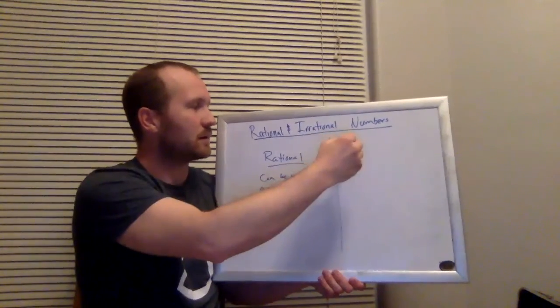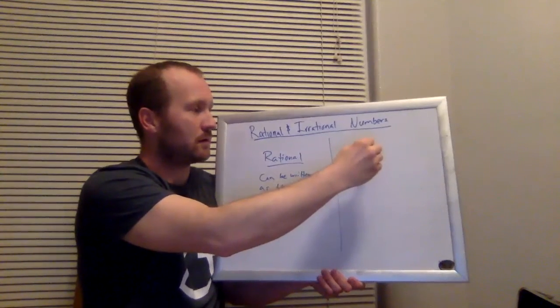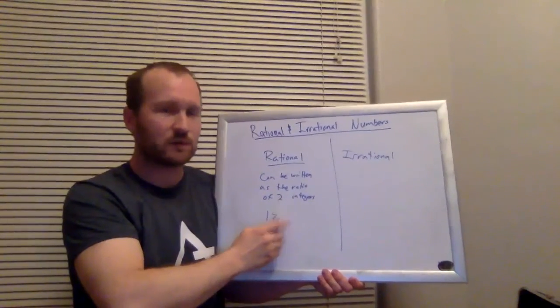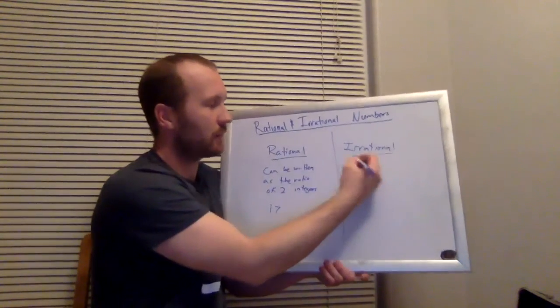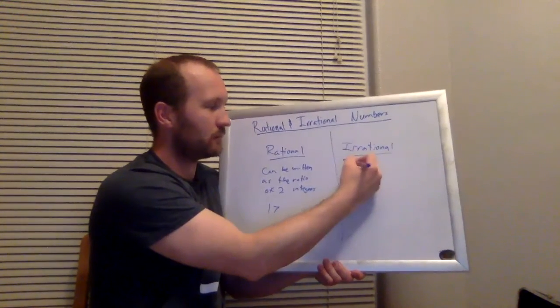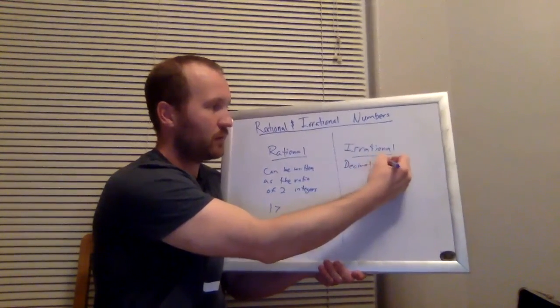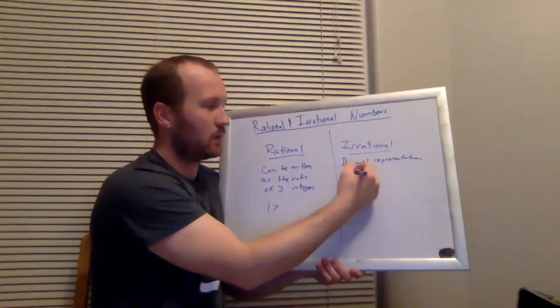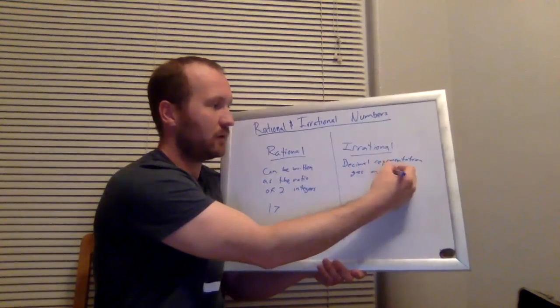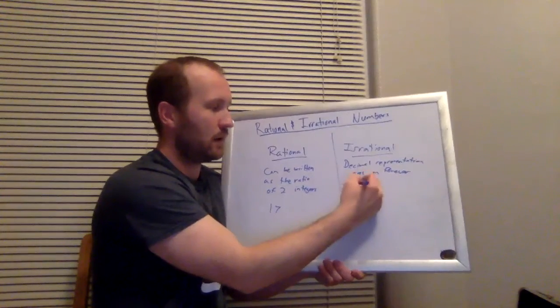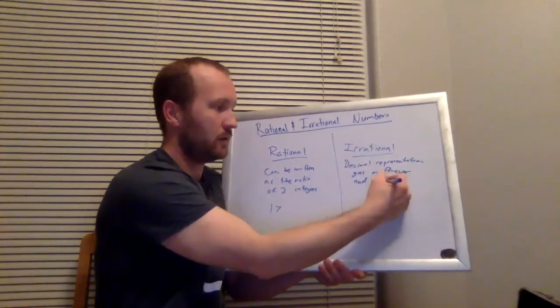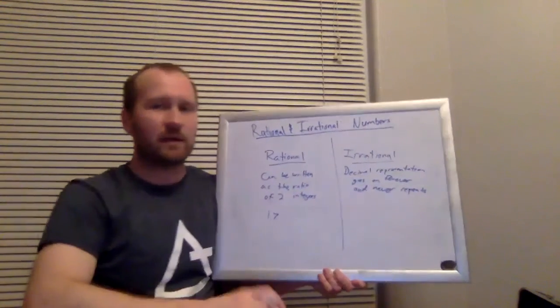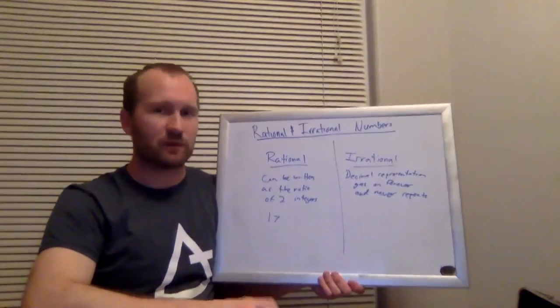Irrational numbers. Irrational numbers cannot be written as a ratio of two integers. And these are numbers that the decimal representation goes on forever and never repeats.